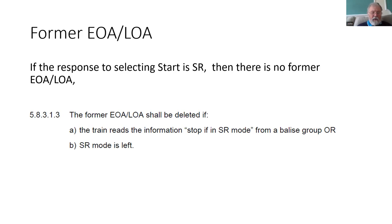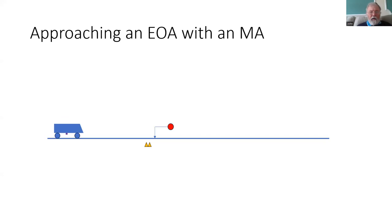If you actually pass over the stop in SR Balise, or you leave SR, then that former end of authority or limit of authority is deleted. So it's quite possible that the driver will activate override and no end of authority or limit of authority will be created. This can be confusing because some onboard suppliers seem to have assumed that if there is no end of authority or limit of authority, then you create one at the front of the train.